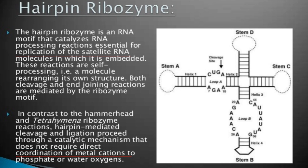Hairpin ribozymes: the hairpin ribozyme is an RNA motif that catalyzes RNA processing reactions essential for replication of satellite RNA molecules in which it is embedded. These reactions are self-processing — that is, the molecule rearranges its own structure. Both cleavage and end-joining reactions are mediated by the ribozyme motif. In contrast to the hammerhead and Tetrahymena ribozymes, hairpin-mediated cleavage and ligation proceed through a catalytic mechanism that does not require direct coordination of metal cations to phosphate and water oxygen.